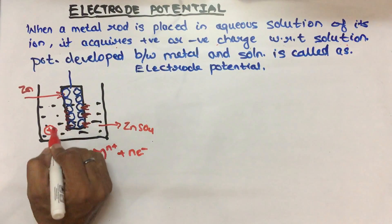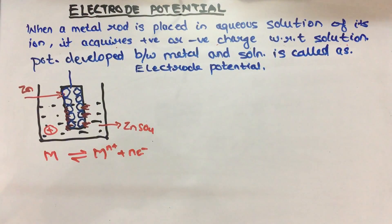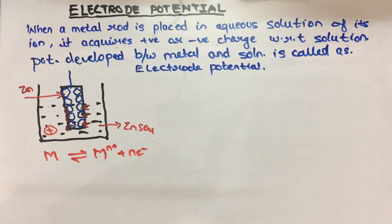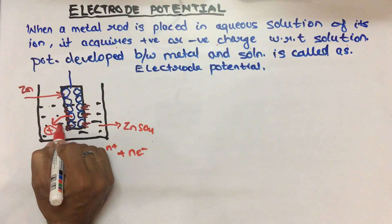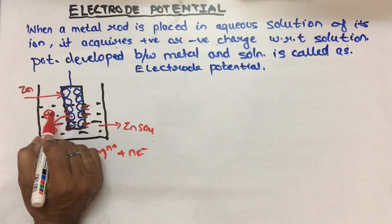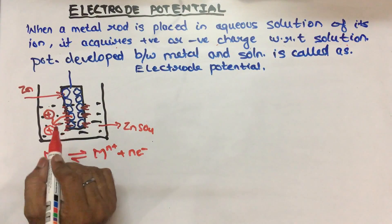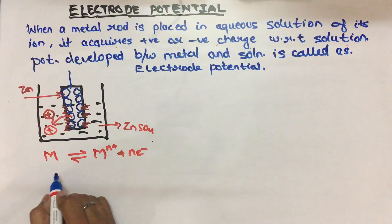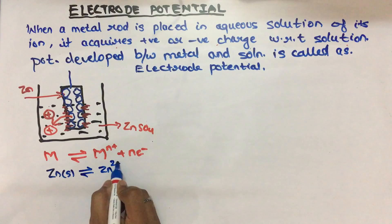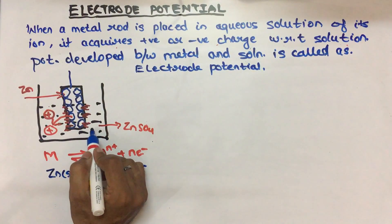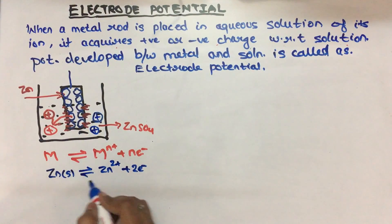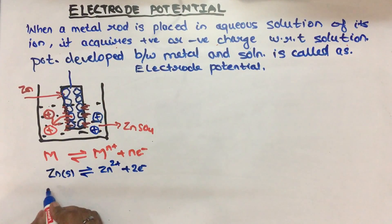Now, what is happening here? The cations in solution can be pushed onto the metal rod, or the metal rod can dissolve into the solution — it depends on the nature of the metal. Electrode potential depends on the nature of the metal. For zinc, it will lose electrons. Zinc ions go into the solution, and electrons remain on the metal surface, making the metal rod negative with respect to the solution. So zinc solid starts dissolving and zinc ions start increasing in solution. A potential develops between this negative charge and the solution. Since oxidation is taking place, this type of potential is called oxidation potential.